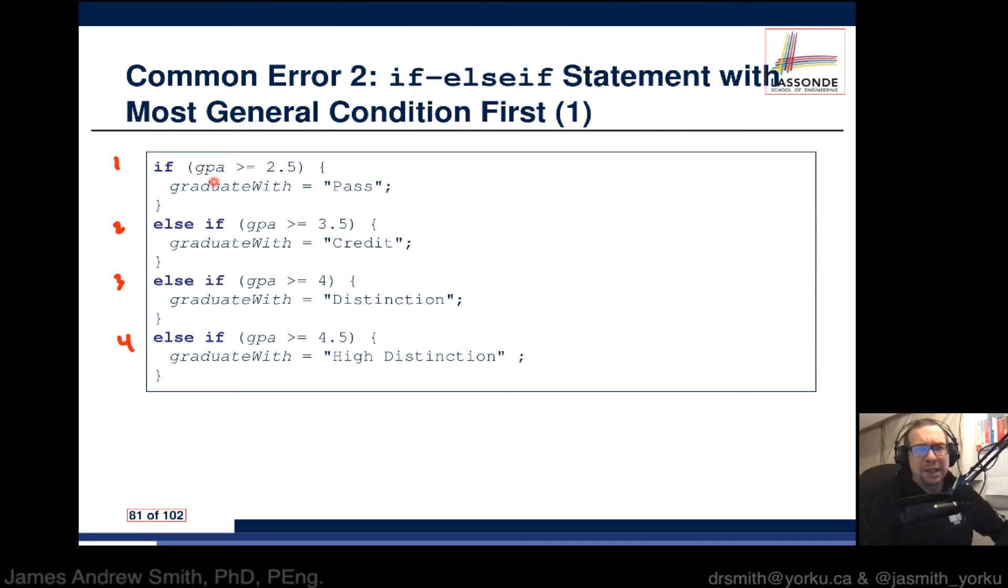The very first test is to see if the student's GPA is greater than or equal to 2.5. If that's the case, then the student will receive a graduate with variable that has a value of pass in it, which is fantastic.